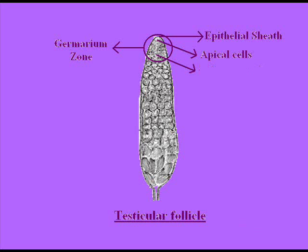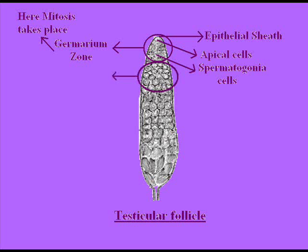In the germarium zone, the upper portion contains apical cells and the lower portion contains spermatogonia cells. In the germarium zone, mitosis takes place. The second zone is the zone of growth.